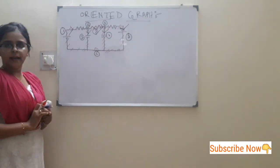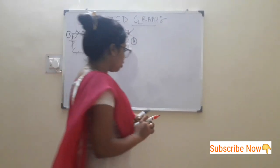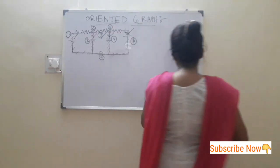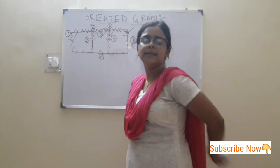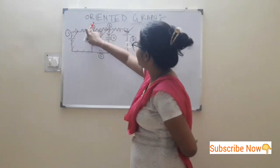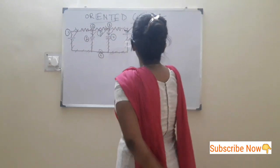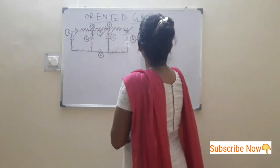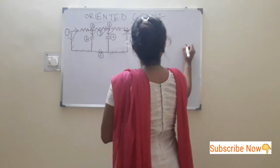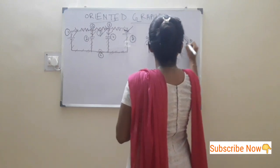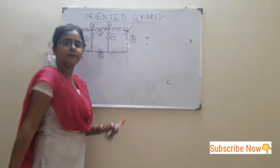So we are drawing an oriented graph based on this circuit. First we have to decide how many nodes are in this circuit. There are 3 nodes: A, B, and C. So we are giving node — this is node A, this is node B, another one is node C.